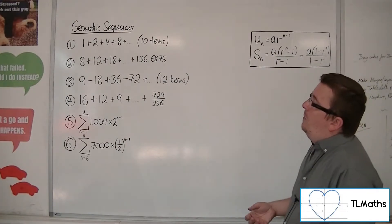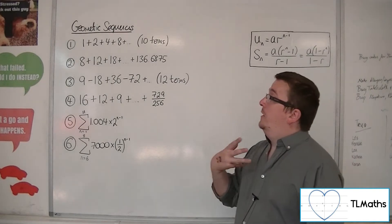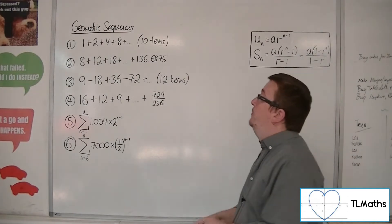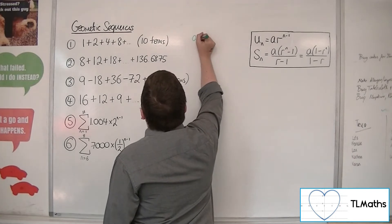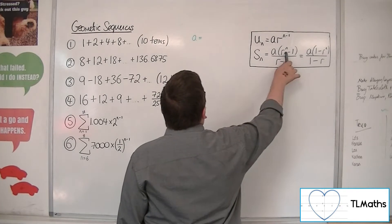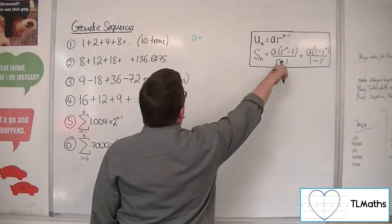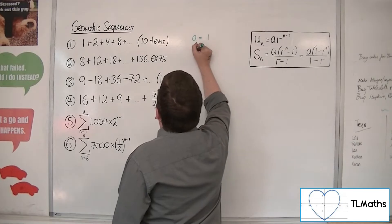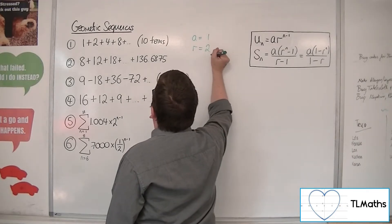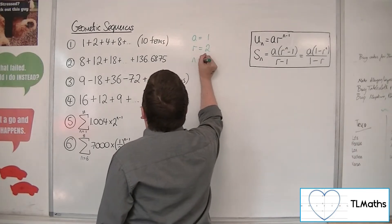So for number one, we've got 1 plus 2 plus 4 plus 8 plus etc., up to 10 terms. We need to identify the first term and the common ratio r, because that's what this formula has, including the n. So a is 1, the common ratio is 2, because we're doubling each time, and n is 10.